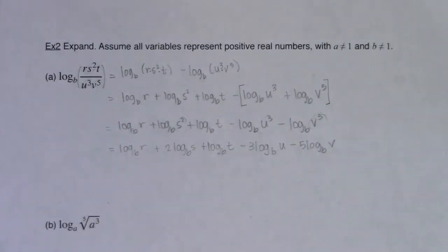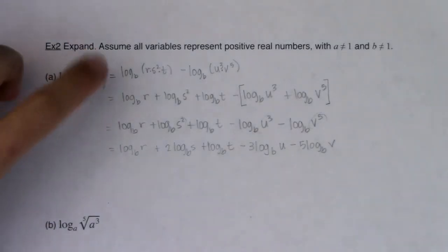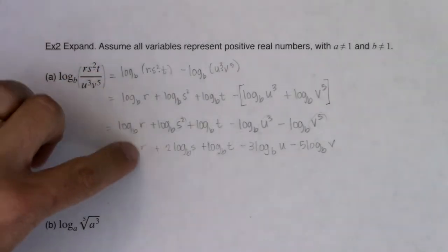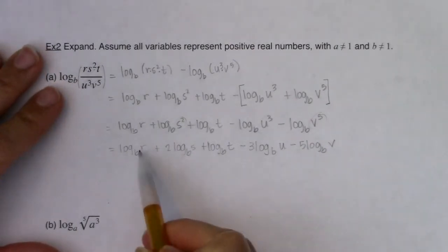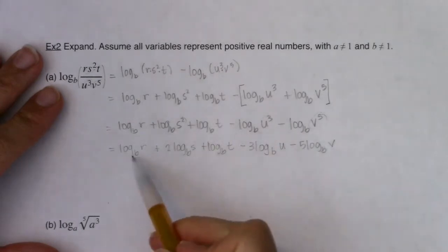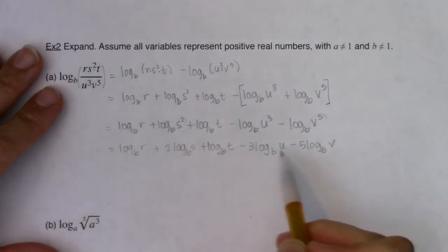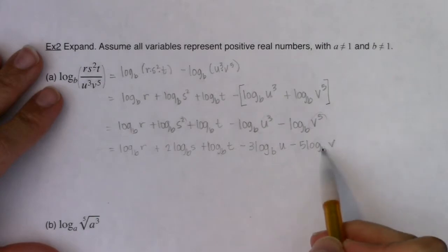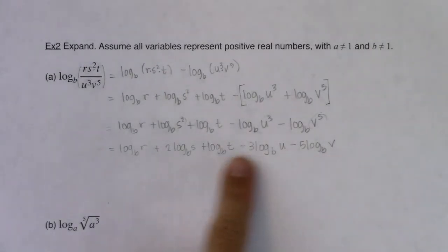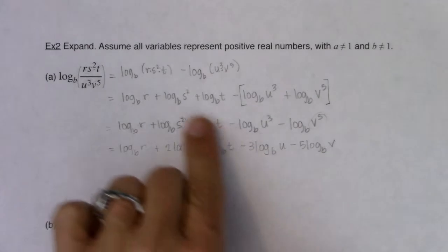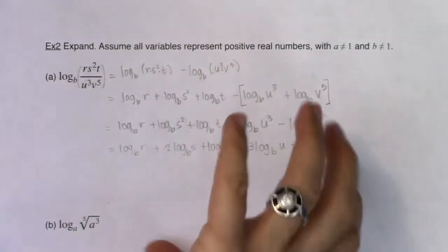That is ultimately what I would have for my expansion — quite an expansion. I had one logarithm with a pretty convoluted argument, and I expanded that to 5 logarithms with simpler arguments: just r, s, t, u, and v. There's nothing I can do to simplify these terms further because r, s, t, u, and v are not powers of b. Now, I also could have asked this question in reverse order — given you this expression and asked you to simplify it down. So we can always expand and we can always simplify, but for examples one and two, we're expanding.